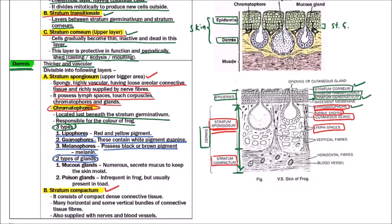Now two types of glands are there. Mucous glands: these are numerous and secrete mucus to keep the skin moist. It is an essential point for cutaneous respiration. And poison glands: infrequent in frog, although usually present in toad.